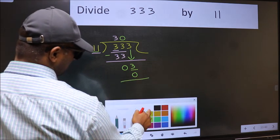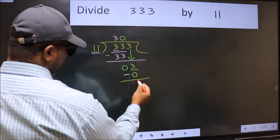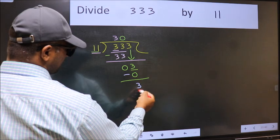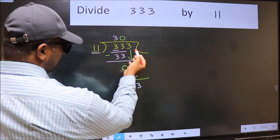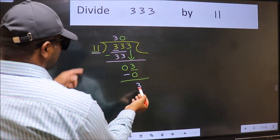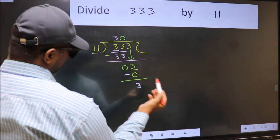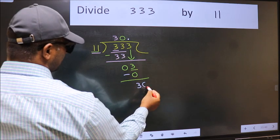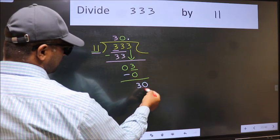Now subtract. 3 minus 0 is 3. Here, we did not bring any number down, and 3 is smaller than 11. So now you can put the decimal point and take 0, making it 30.